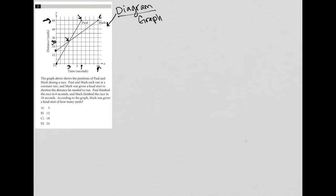The graph above shows the position of Paul and Mark during a race. Paul and Mark each ran at a constant rate, and Mark was given a head start to shorten the distance he needed to run. OK, so this is our head start here. OK, that's right. So Paul started at the starting line, and Mark started 12 yards ahead.